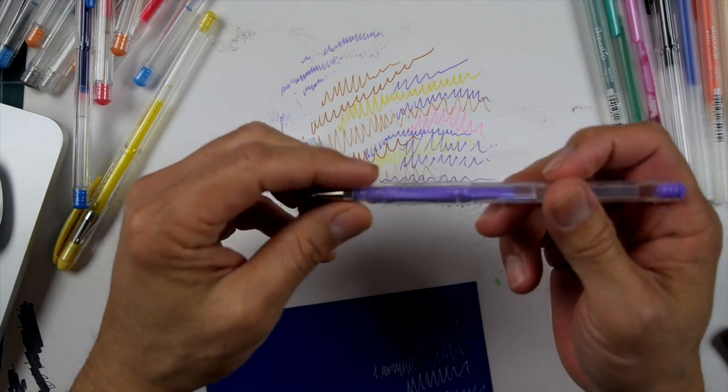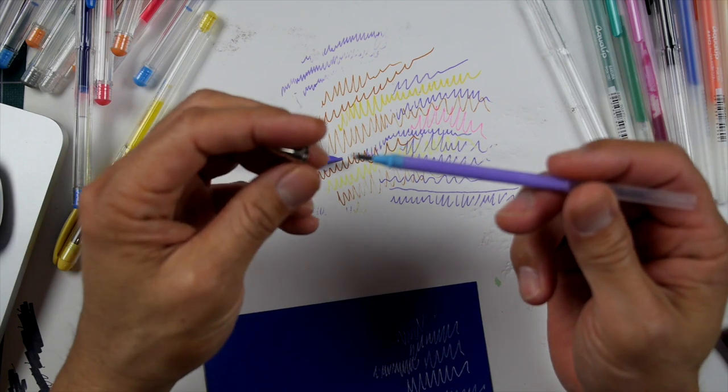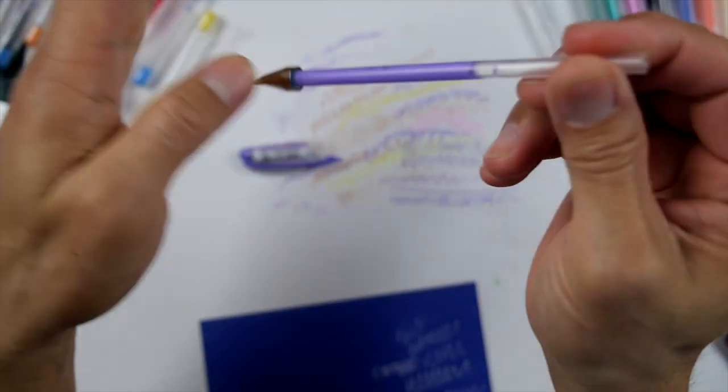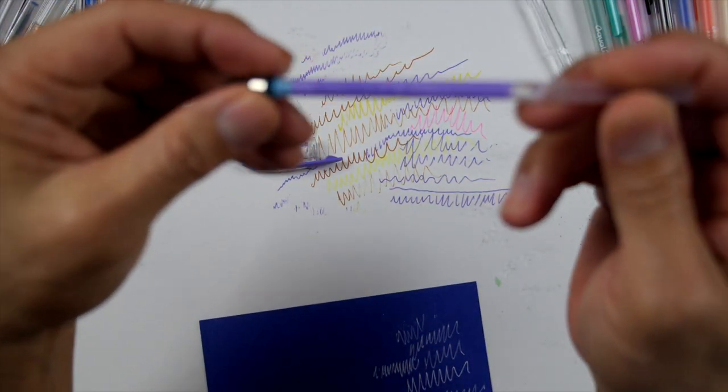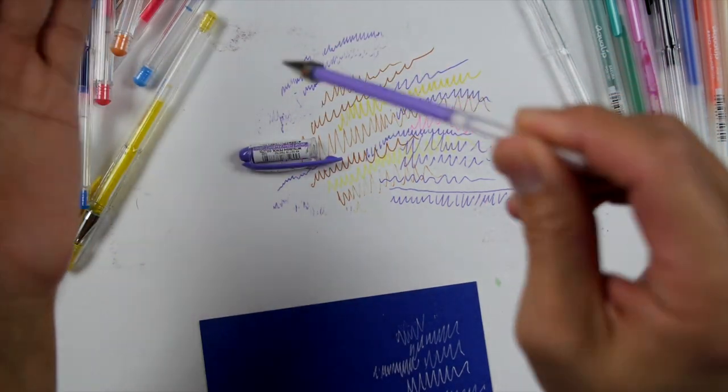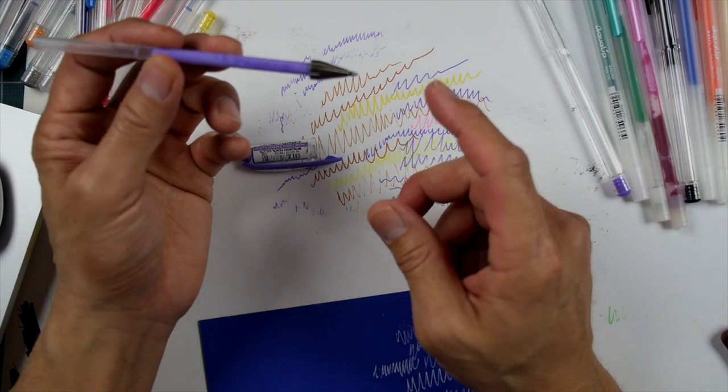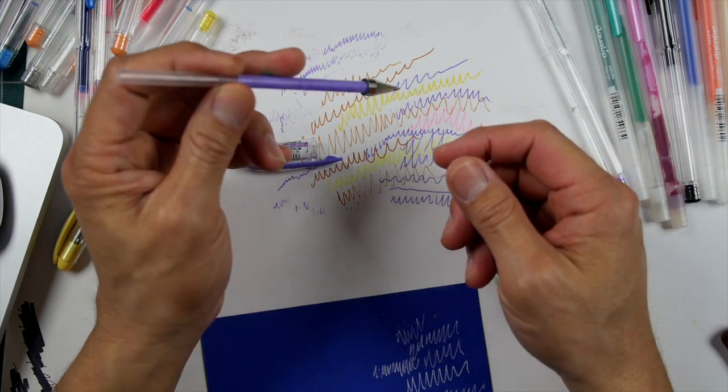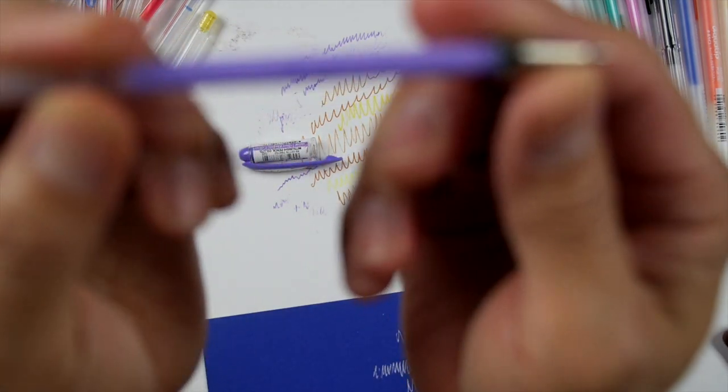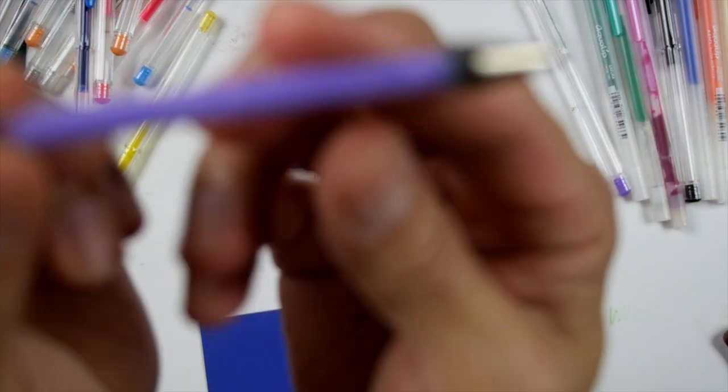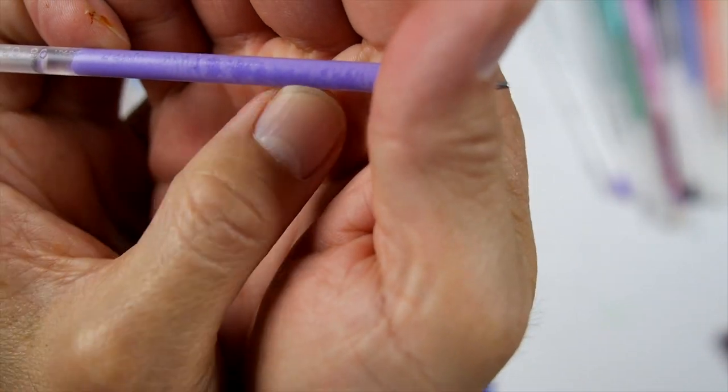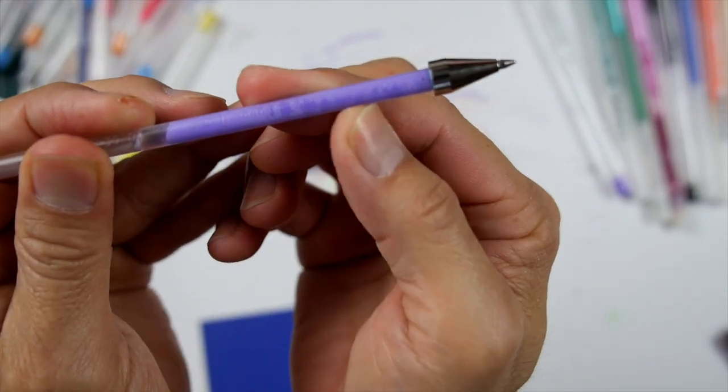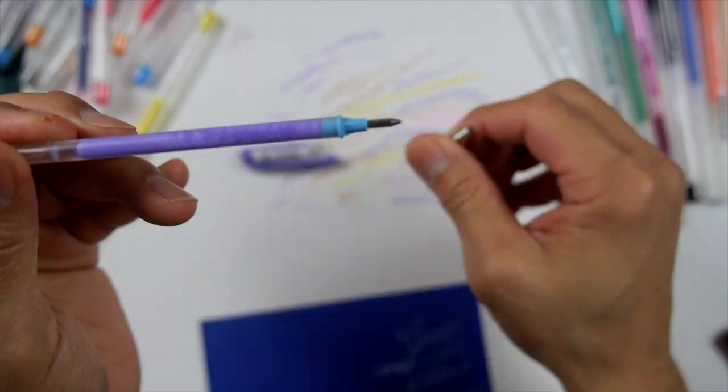Here's something that someone pointed out to me on Facebook. They take this out of here. And this being like a straw with this hole right here, they blow into this thing right here. They were talking about getting some of that ink out here. I'm going to try all these things that people have suggested over the years.